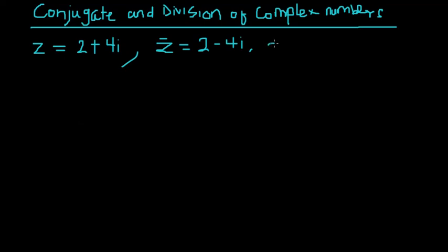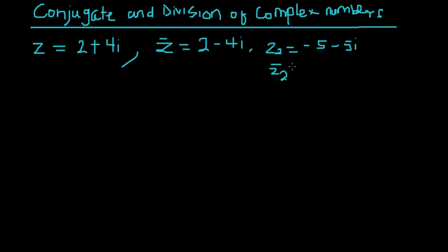Let's take another instance: z₂ is equal to -5 - 5i. When we take the conjugate of z₂, we negate the imaginary side, so we get -5 + 5i. This is what we mean by conjugate complex numbers.